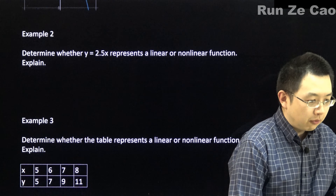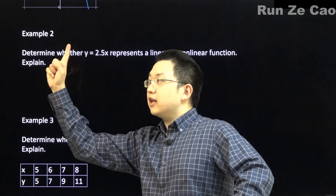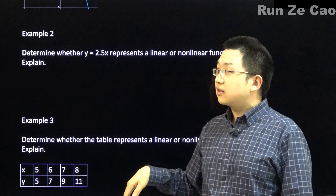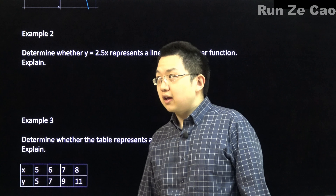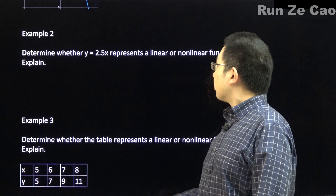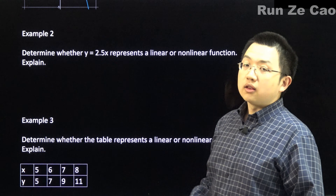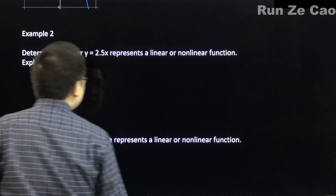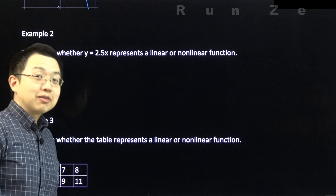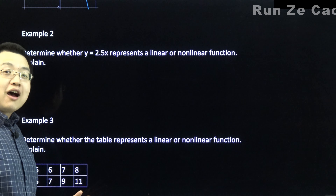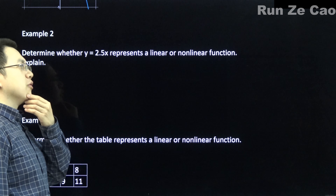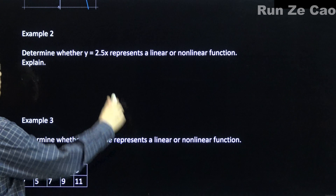Determine whether y = 2.5x represents a linear or nonlinear function. For every one unit x increases or decreases, y changes by 2.5. So you have points (0,0), (1, 2.5), (2, 5), and so on — this is a constant slope. We see that x is to the power of 1, which is hidden since mathematicians prefer to write less. This is linear.